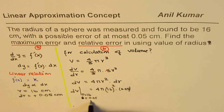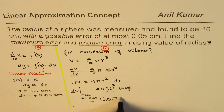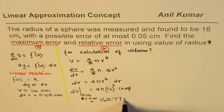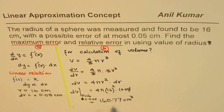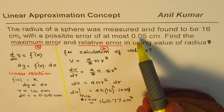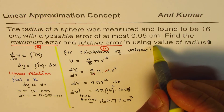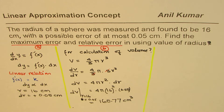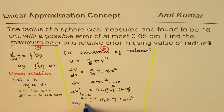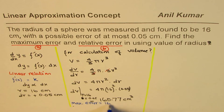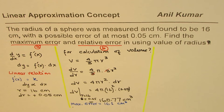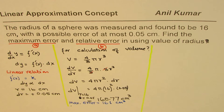That gives us 160.77 cm³. So the maximum error in volume is approximately 161 cm³. That is the error in volume you get when the error in the radius is 0.05 cm.